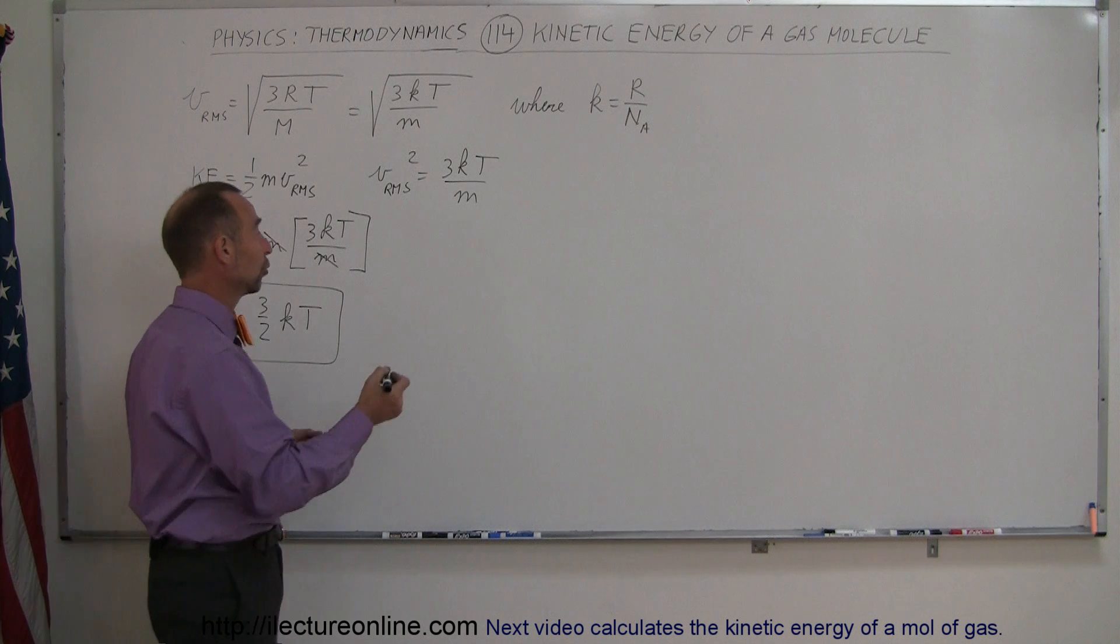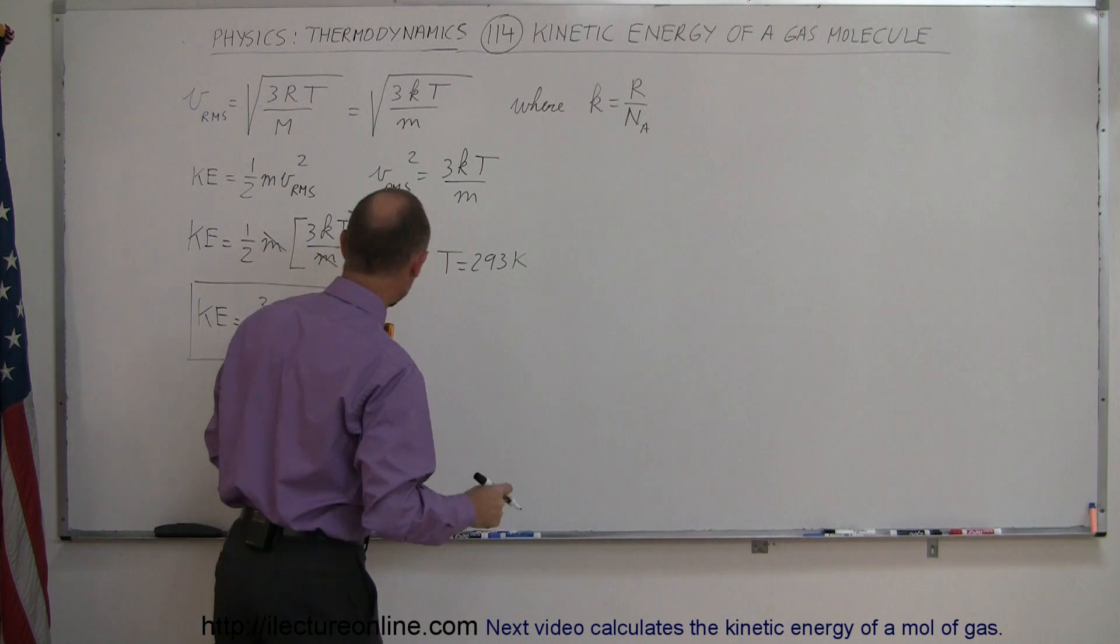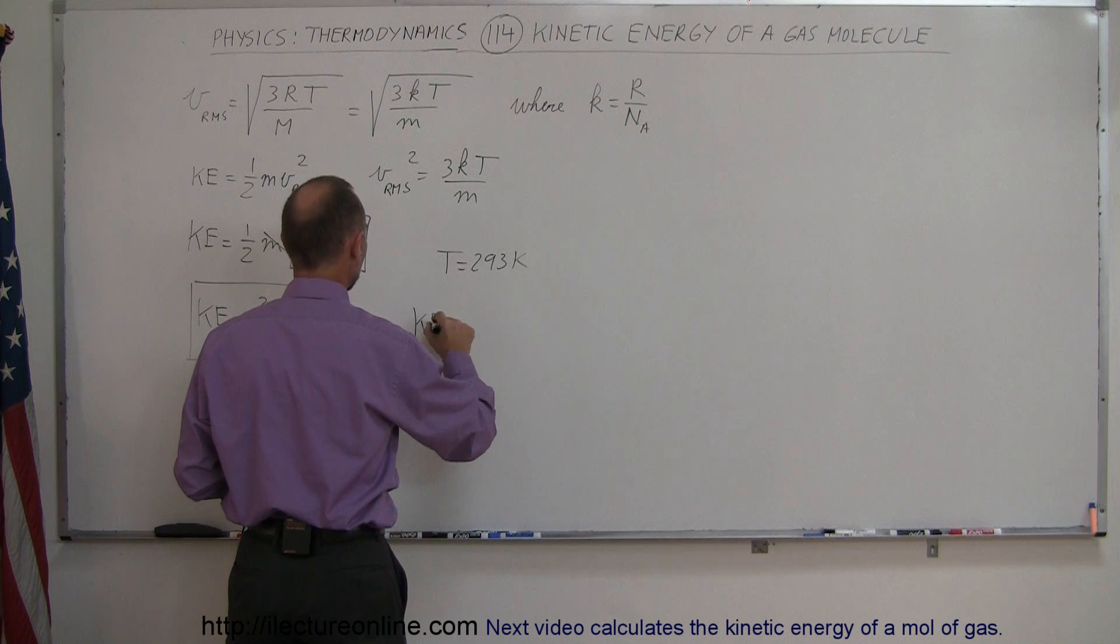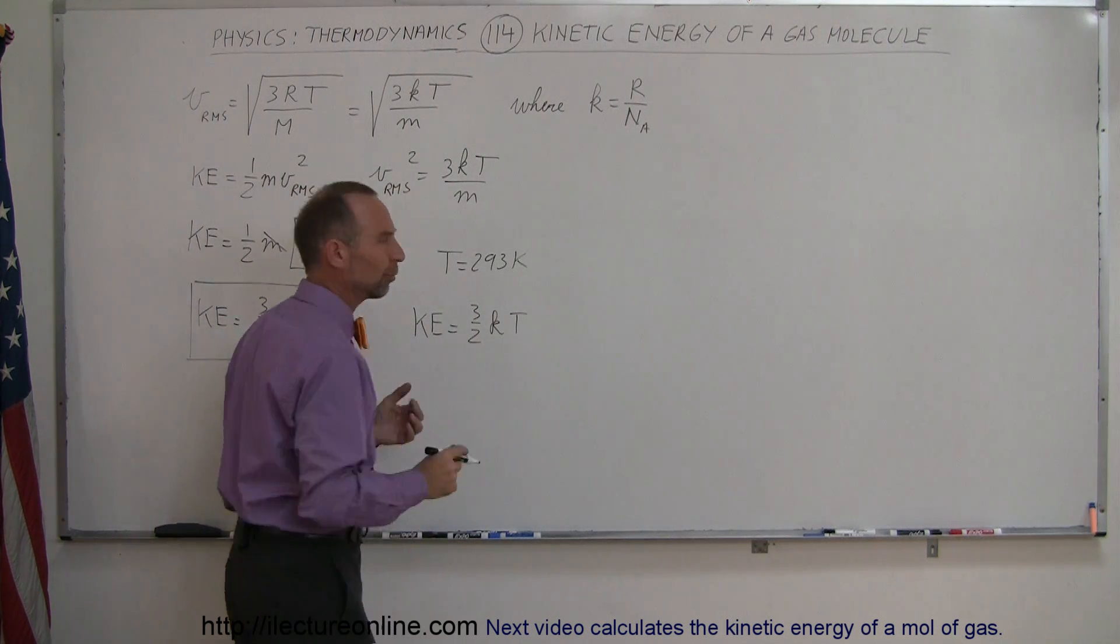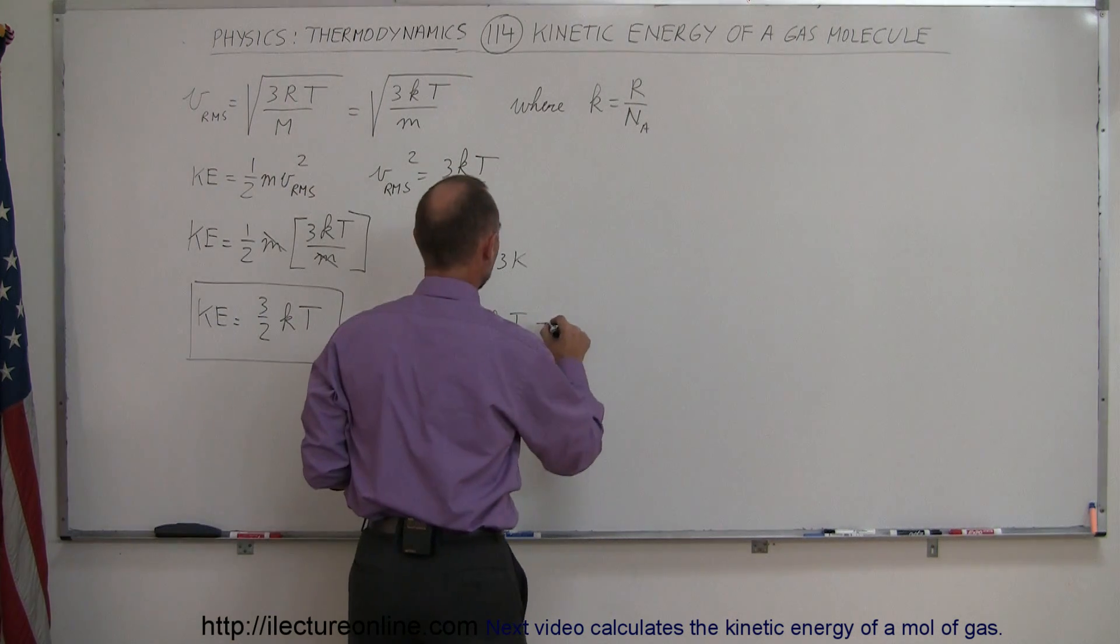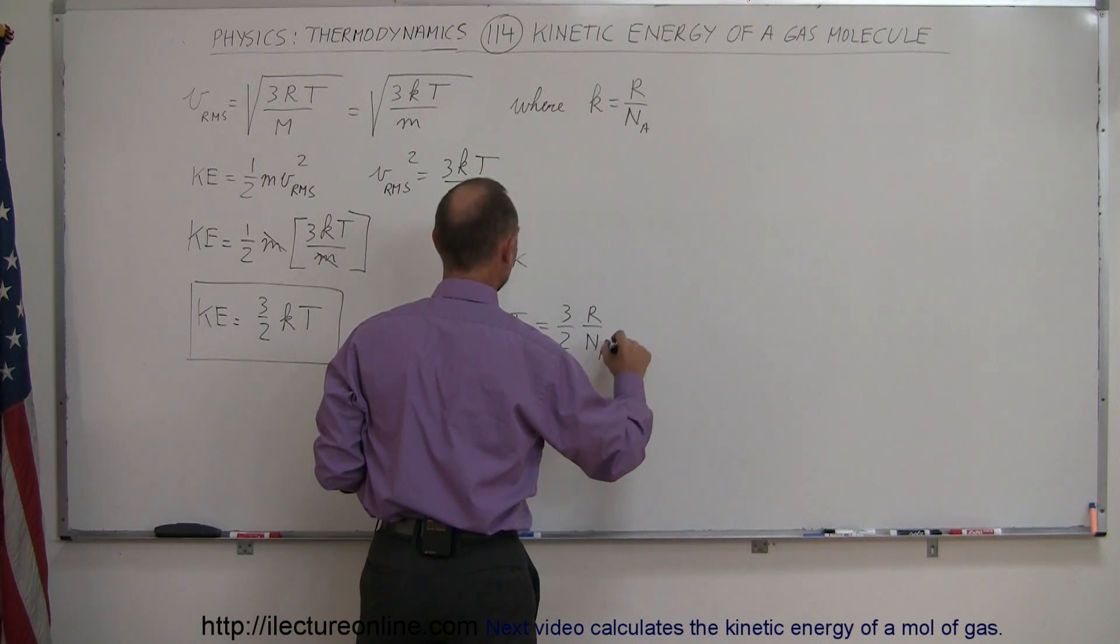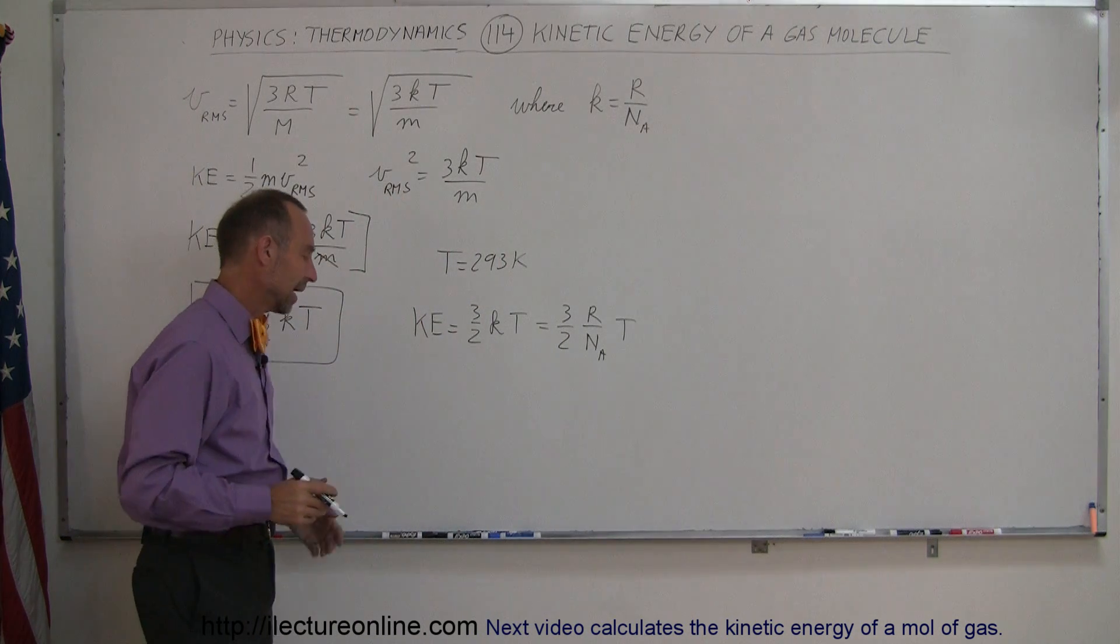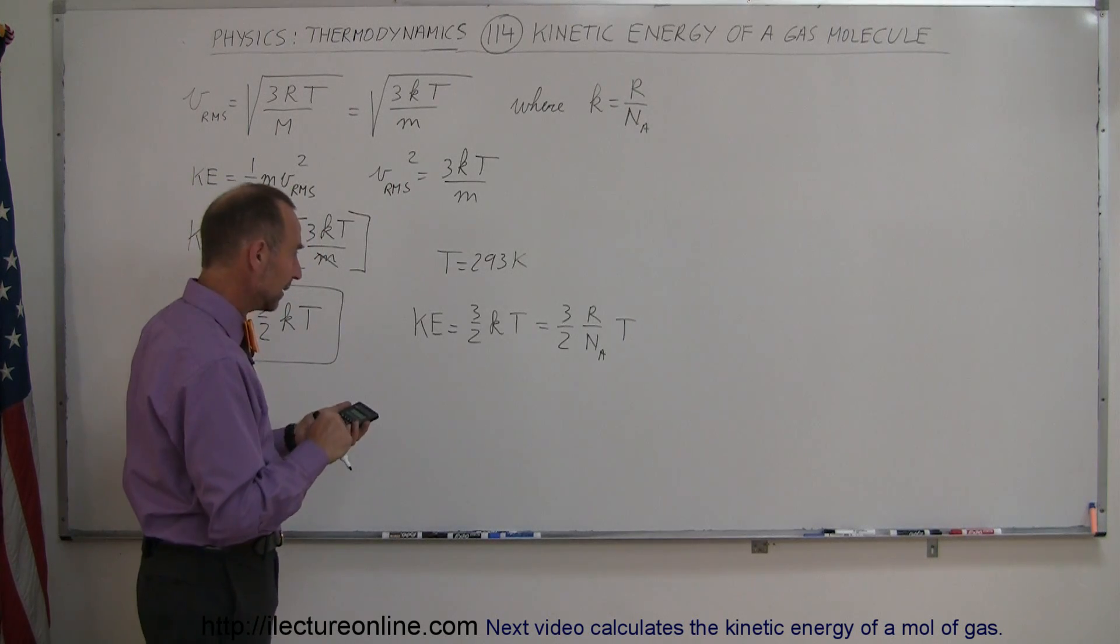So let's say for example in this room where the temperature is about 293 Kelvin, about 20 degrees centigrade, what is the kinetic energy of a single molecule? So the kinetic energy is equal to 3 over 2 KT. Now since I don't remember what K is equal to, I can replace K by R divided by Avogadro's number. So this is 3 over 2 times R divided by Avogadro's number times the temperature. Of course you can go to your textbook and find out what K is equal to, I just like to remember as little as I need to.